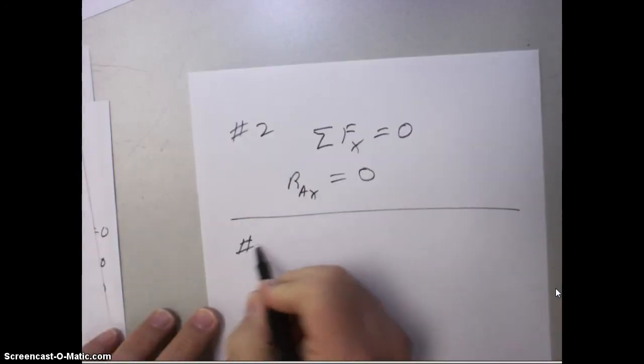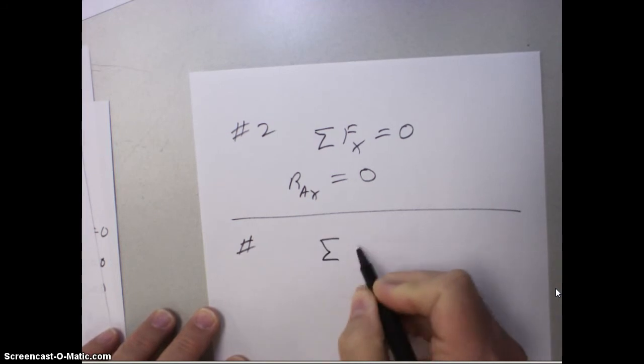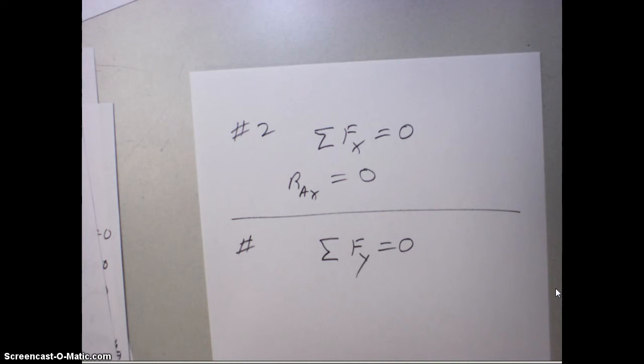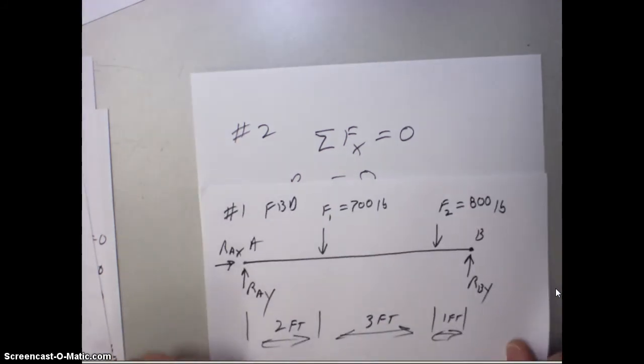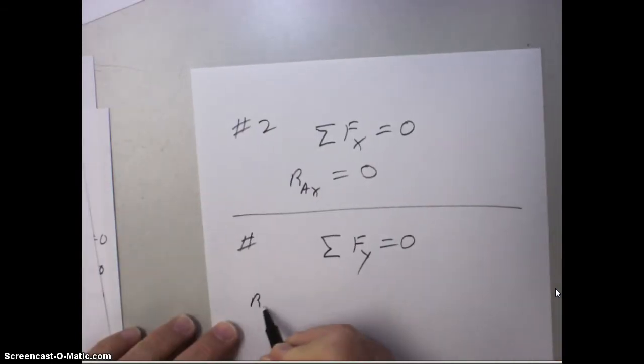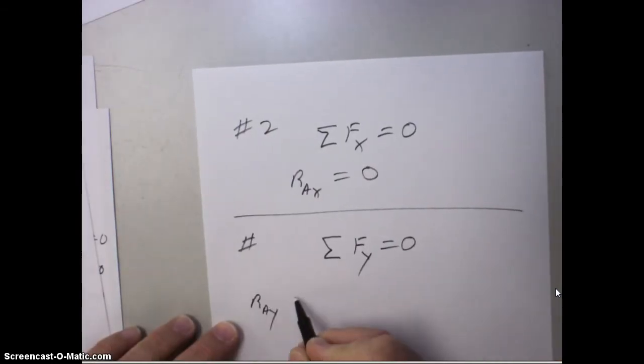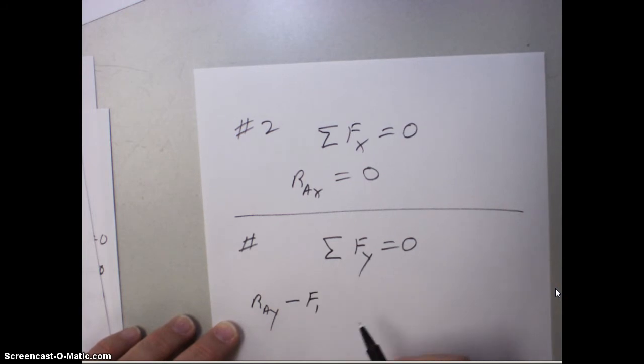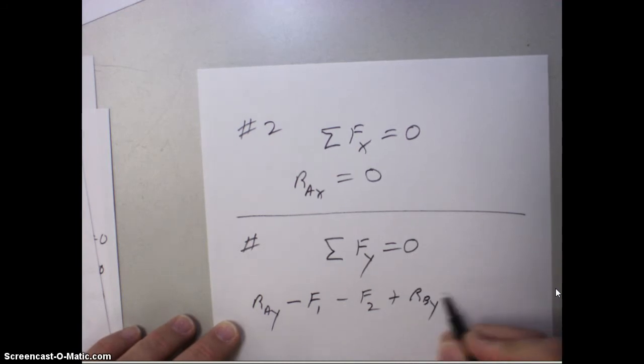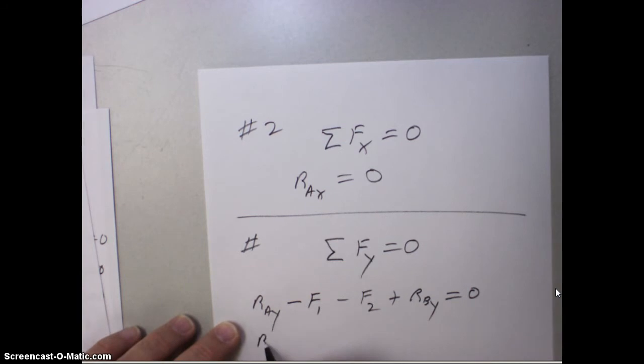Step three, we look at the sum of the forces in the Y, set it equal to zero. Going back to our free body diagram, we look at all forces going up or down and set it equal to zero. So RAY minus F1 (because it's going down), minus F2 (because it's going down), plus RBY going up (so it's a positive) equals zero.